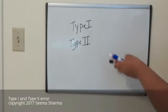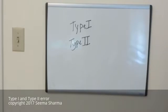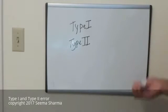You're probably familiar with the concept of a Type I and a Type II error in biostatistics, but it's probably difficult for you to remember what each one means at the right time. So I'm going to help you out.